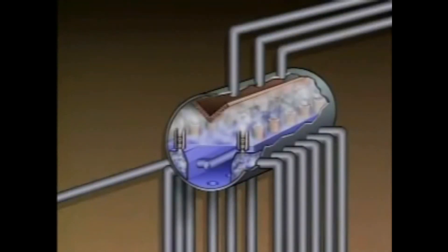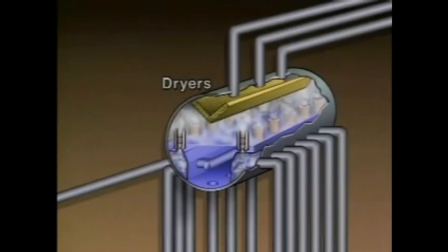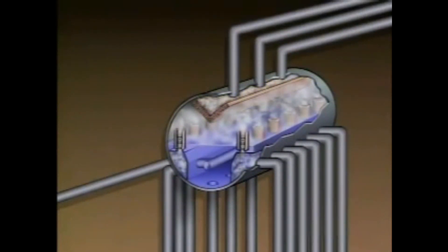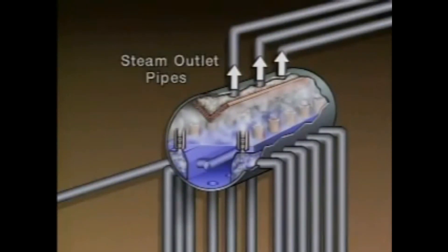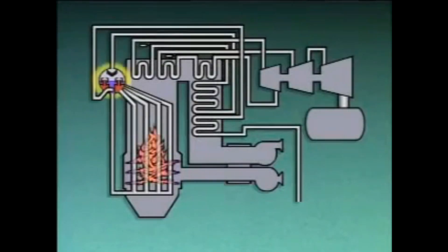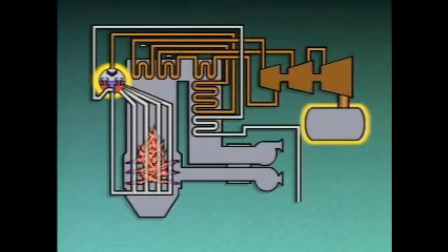The steam rises into the upper part of the drum. The steam could still have some water mixed in with it, so in this example it is sent through dryers, which are located in the top of the drum. The dryers remove as much water as possible before the steam leaves the drum. This is important because water that flows out of the drum with the steam could damage downstream components. The steam is discharged from the drum through steam outlet pipes.